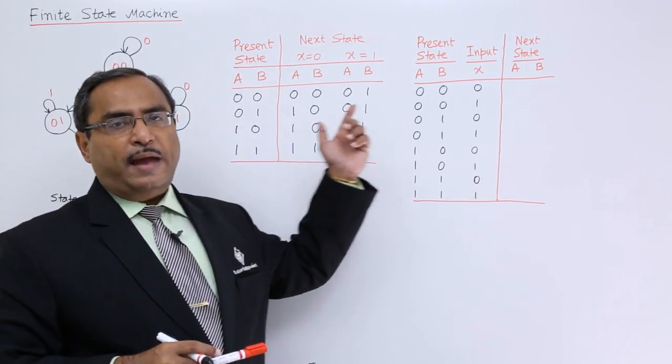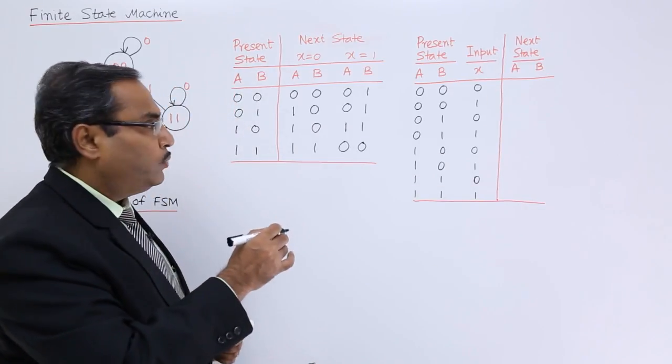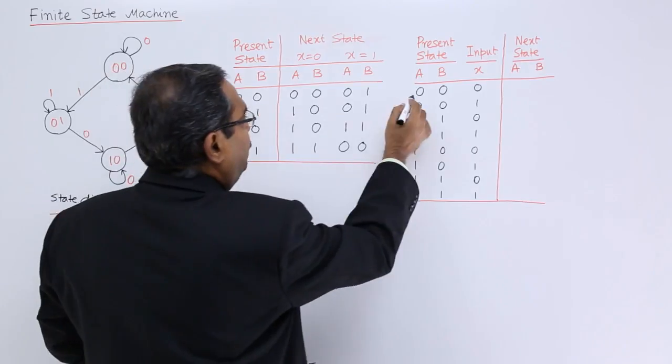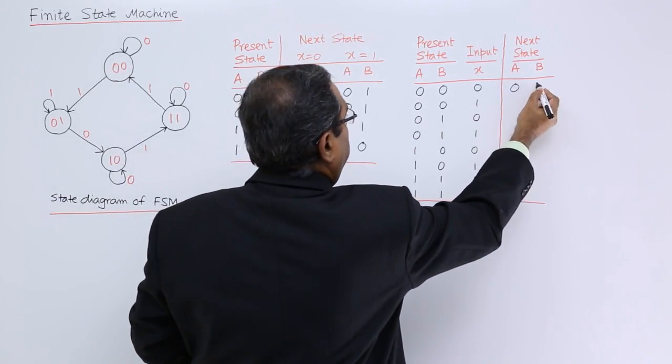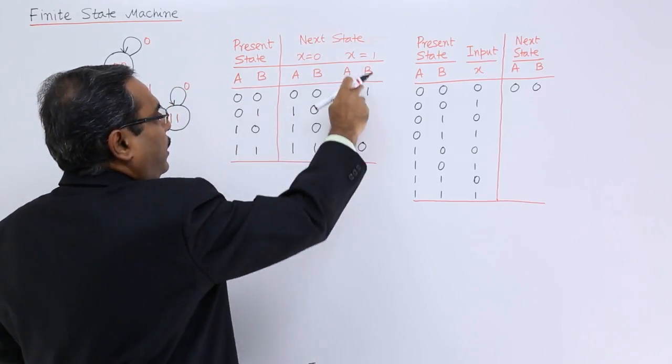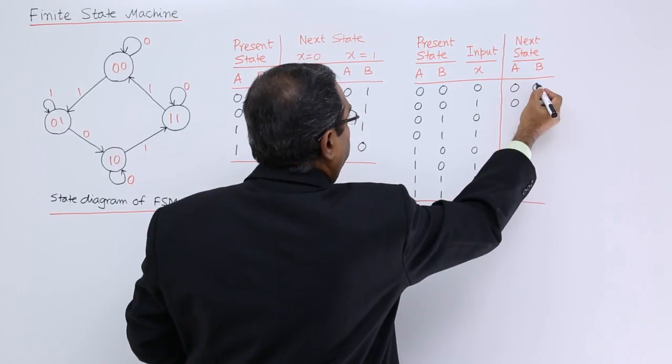This table can also be mapped onto this respective table in another form. Let us map that one here. For 0 0 for 0 input we are having 0 0. For 0 0 for 1 input next it will be 0 1. In this way we can proceed for the rest.